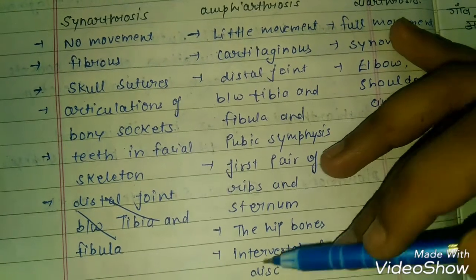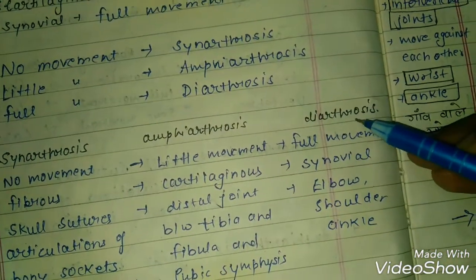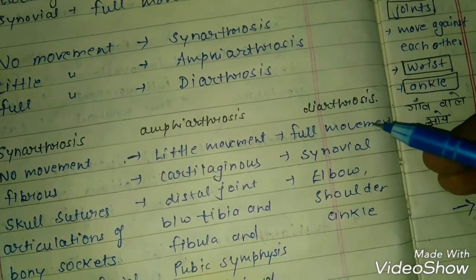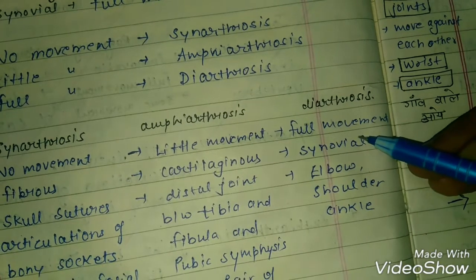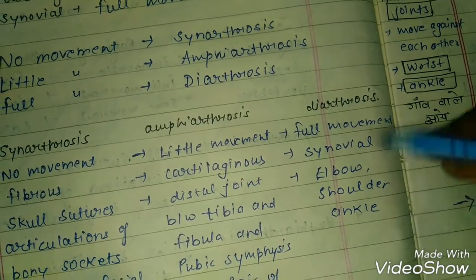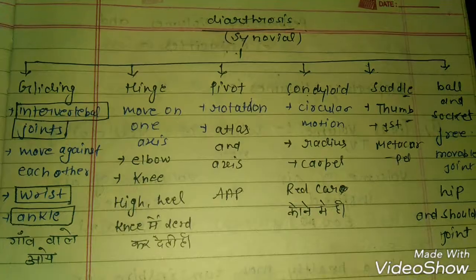Diarthrosis allows full movement and is synovial. Examples of diarthrosis include the elbow, shoulder, and ankle joints.